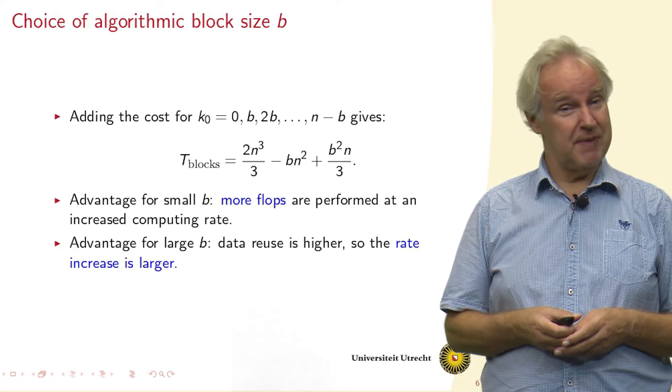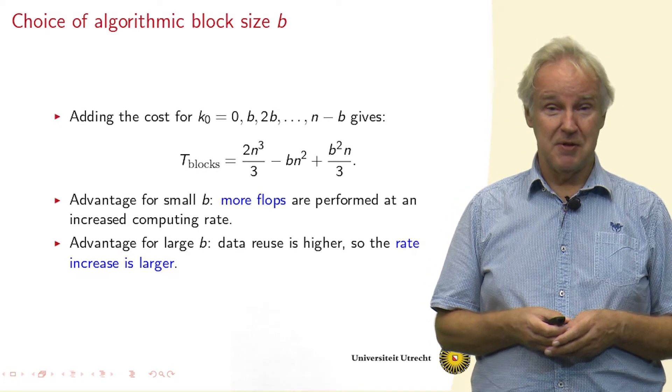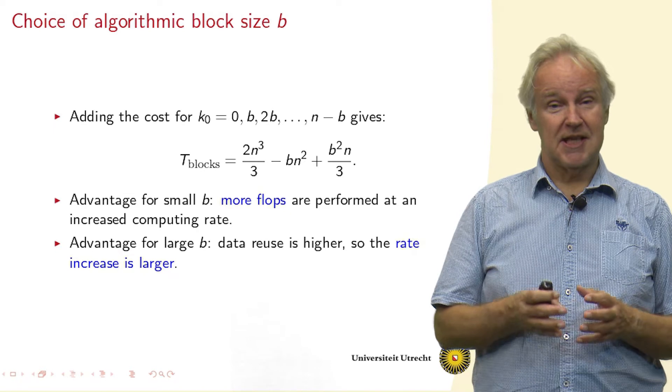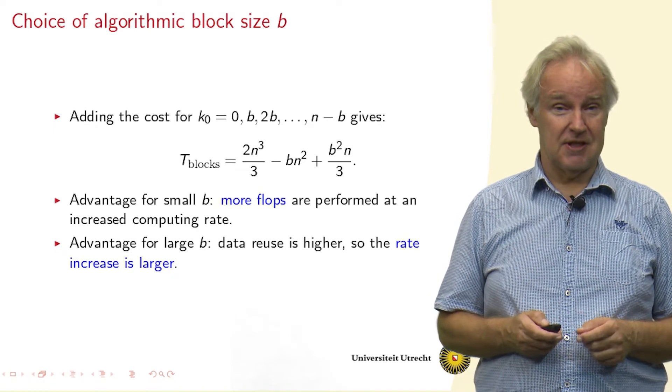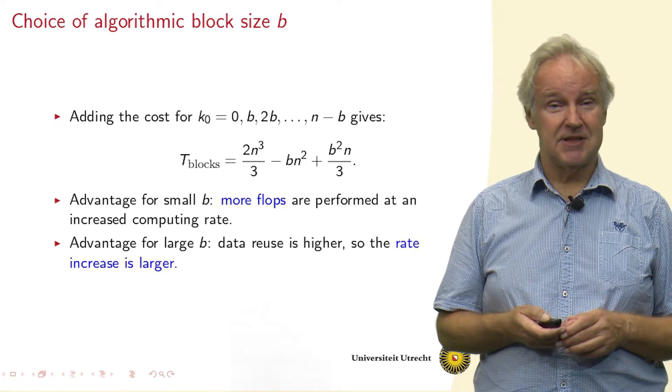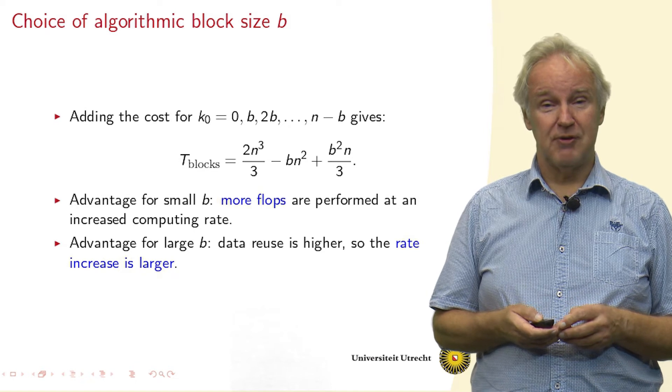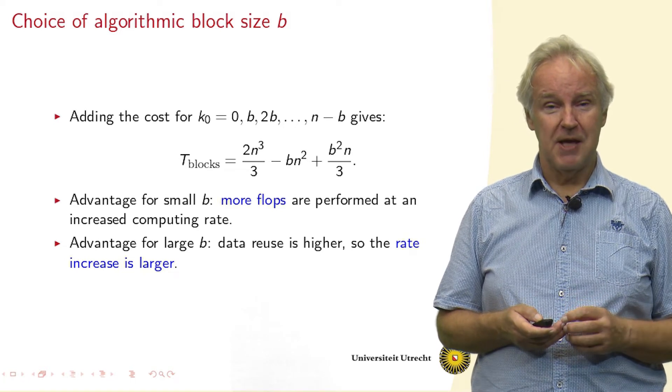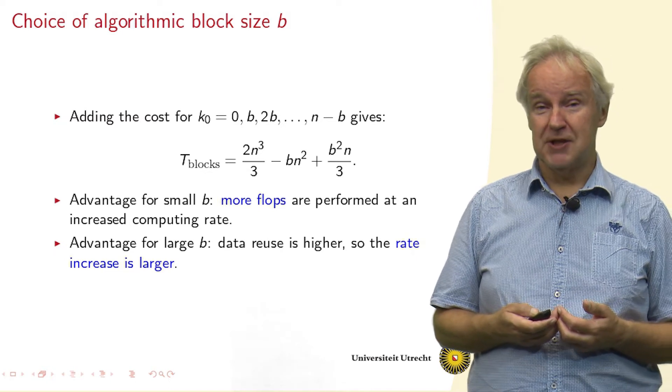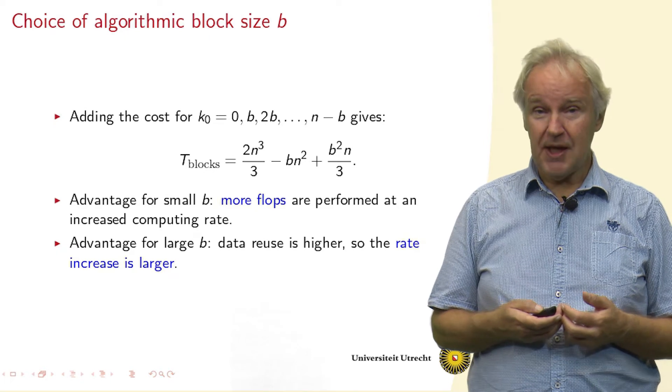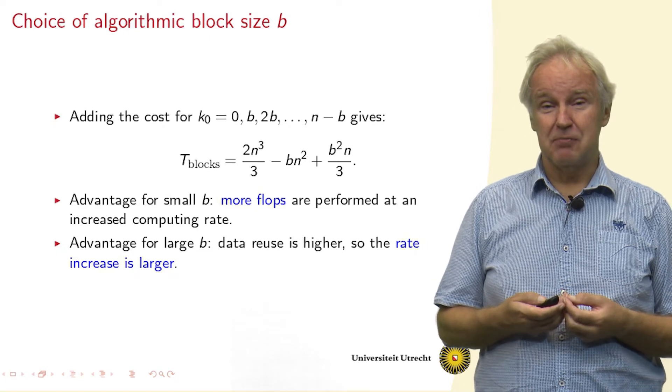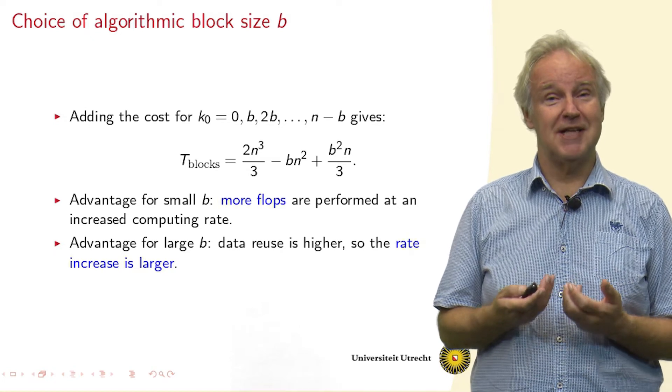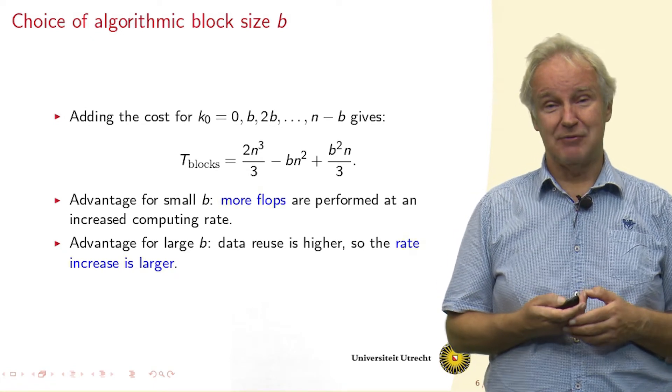This means we can use matrix-matrix multiplication, which has very efficient implementations based on proper use of the cache. If we count the number of flops that in the whole algorithm is carried out in these delayed updates, then we get a formula 2n³/3 - bn² plus a lower order term. We can ignore this lower order term, but when we look at what values of b we want to choose, then you see if we take a small b, then most of the flops are in this increased computing rate.